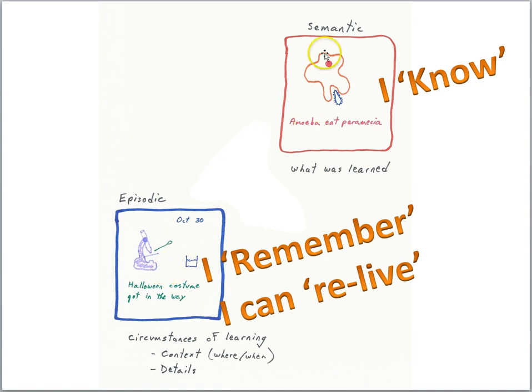On the other hand, for semantic memories we say things like 'I know.' I know things about amoeba and paramecia. I know that amoeba eat paramecia. What's lacking here is that vividness of the details of the circumstances of learning. I'm not transporting myself back in time—I'm simply retrieving information about amoeba and paramecia.